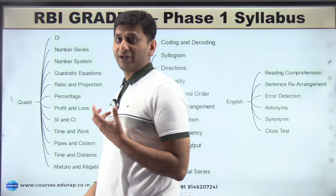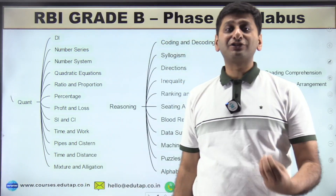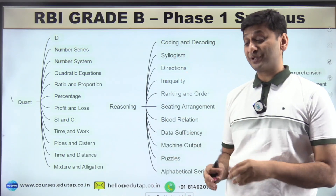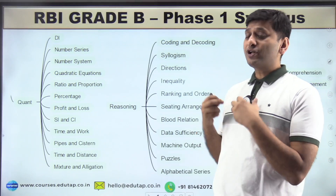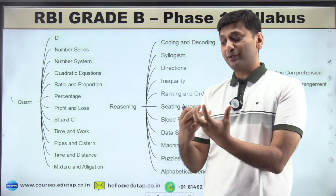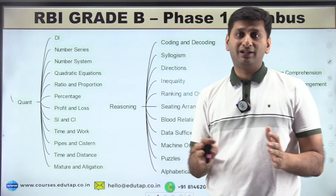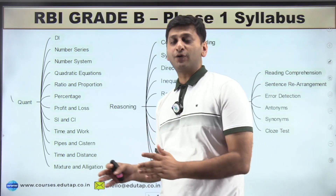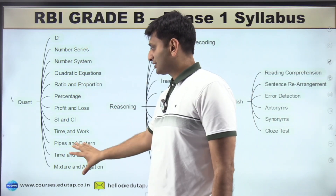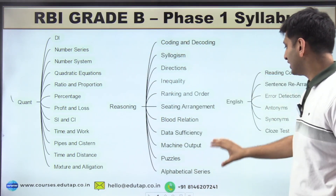Now let's talk about the syllabus. For phase one, the syllabus is not mentioned in the notification. Phase two syllabus is detailed, but phase one is not. So topics have to be determined based on previous year questions. By analyzing the last five years of papers, specific topics have been clearly identified for quant, reasoning, English, and GA.